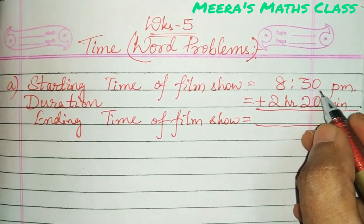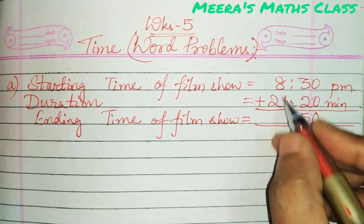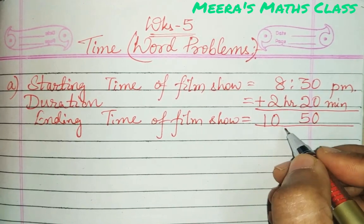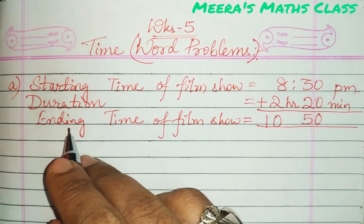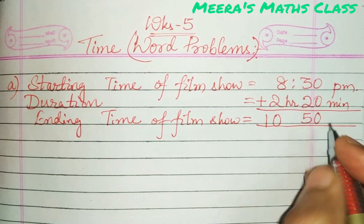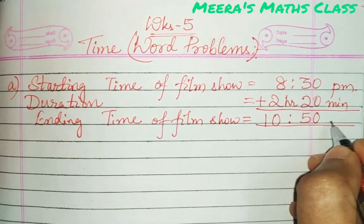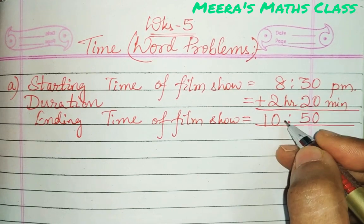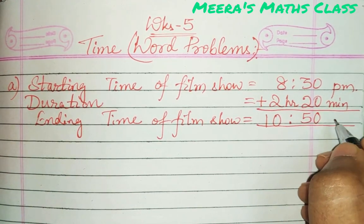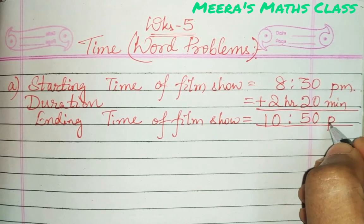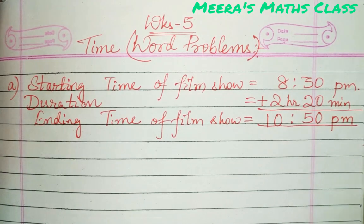Now what you are going to do is find the ending time. Add: 0 plus 0 is 0, 3 plus 2 is 5, 8 plus 2 is 10. Don't write hours and minutes — this is ending time, it will be a.m. or p.m. So 10:50. Since p.m. is given and there is no 12 o'clock in between, you write 10:50 p.m.